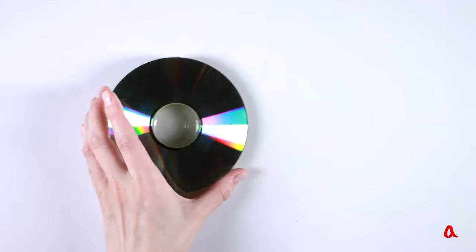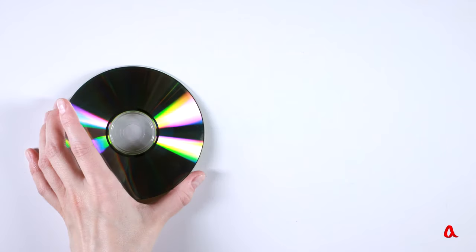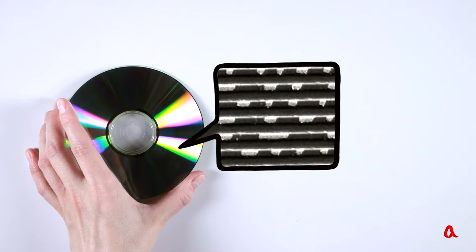Now let's talk about how a CD works. Its surface is marked with parallel tracks, the distance between which is only 1.5 microns.